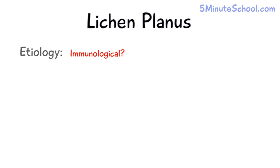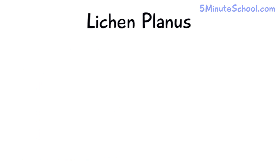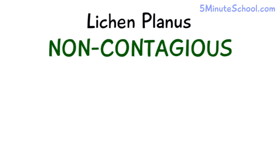The etiology or cause of lichen planus is actually unknown, but it's theorized to have an immunological cause — meaning the immune system and the skin's natural defenses are overreacting. When we take a sample of the skin and examine it under a microscope, there is a high amount of lymphocytes around the basal keratinocytes, indicating they are attacking these cells. This results in edema (swelling) and the formation of clefts, as seen in the microscopy image.